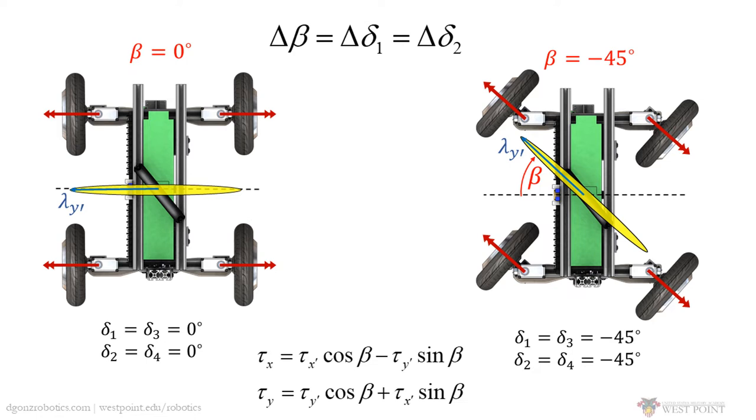The x' eigentorque shown here is still zero, but the direction about which the y' eigentorque can be applied has changed. Submovement beta also causes the wheel masses to swing around, generating reaction torques along the y' axis, but exploring this capability is left for future work.